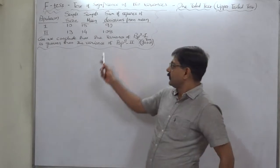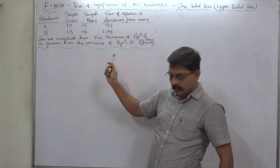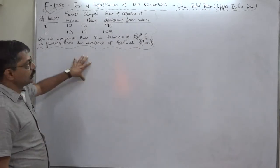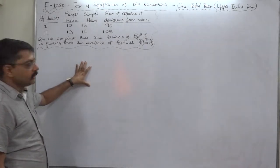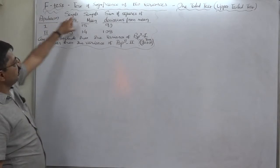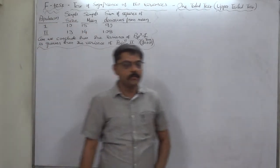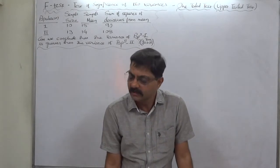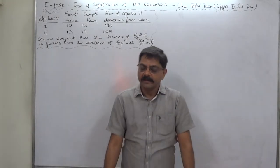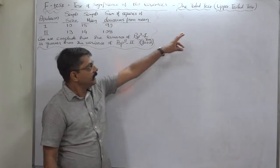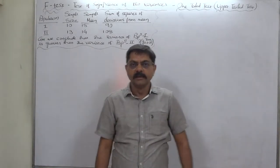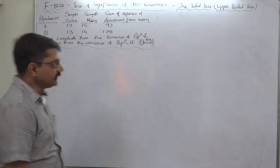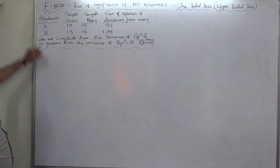As a student, please take due care at the time of solving the problem. The population having the greater sample variance is taken as population one — it becomes the numerator while calculating the F-ratio. That's why it is also called the upper-tail test. Now let's take a case and try to understand.